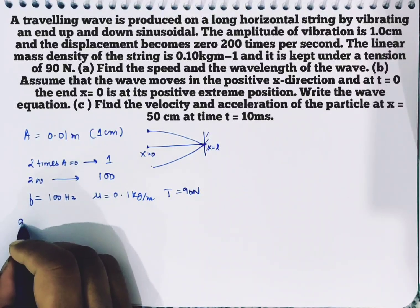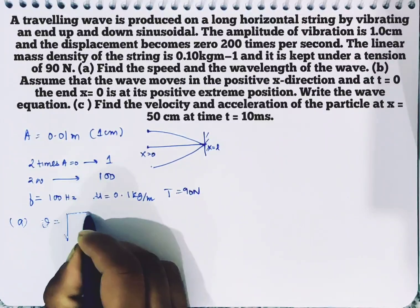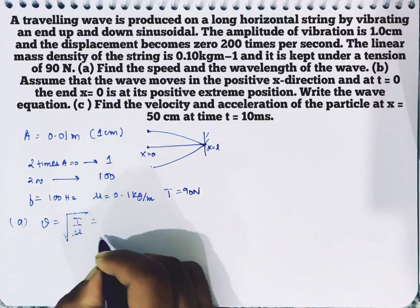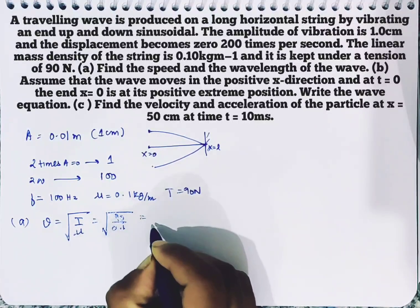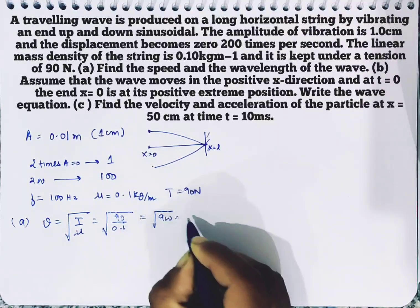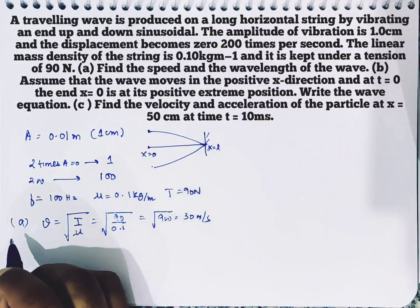Now we have to find the speed. Speed is square root of T by mu. Tension is 90 upon 0.1, that is 900, so we have 30 meter per second. That is the speed of the wave.